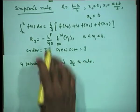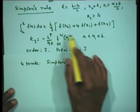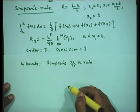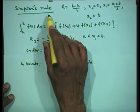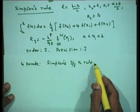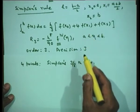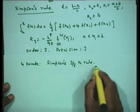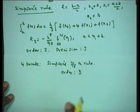The Simpson's three-eighths rule has 3h/8 outside the bracket instead of h/3, and contains four points. However, this formula is not used much because the four-point formula has the same order as the Simpson's one-third rule. There is no point doing extra computation — evaluating one more value of f(x) — since it is also of order three only.